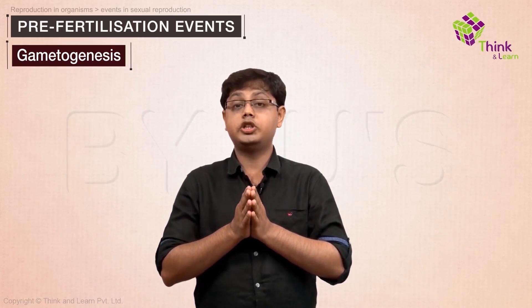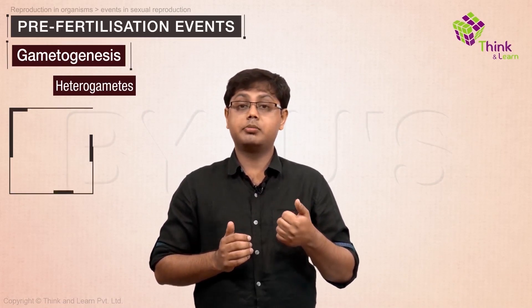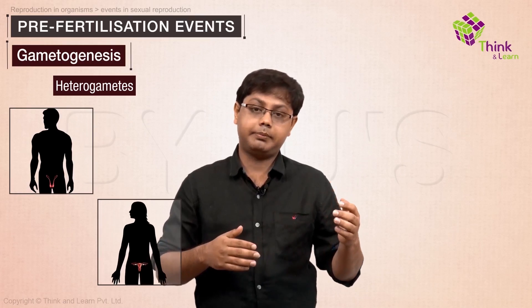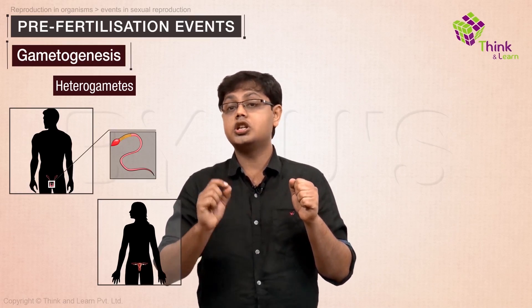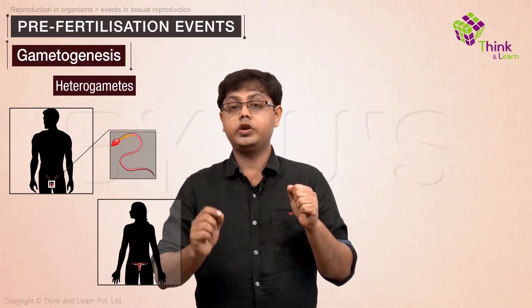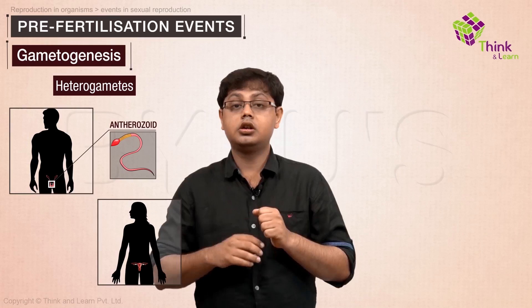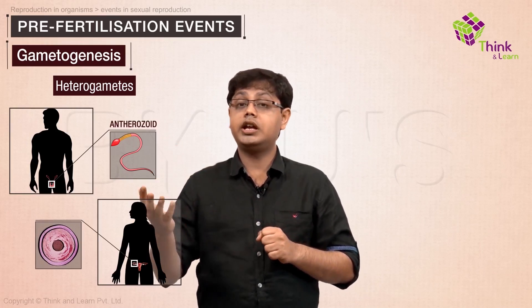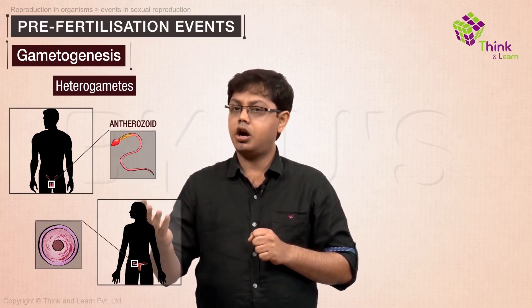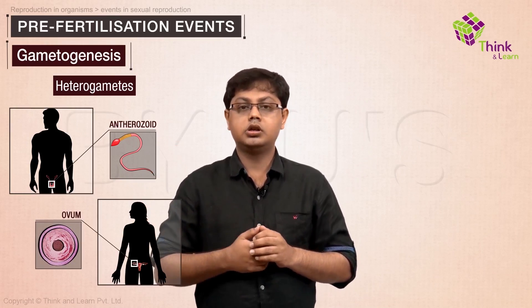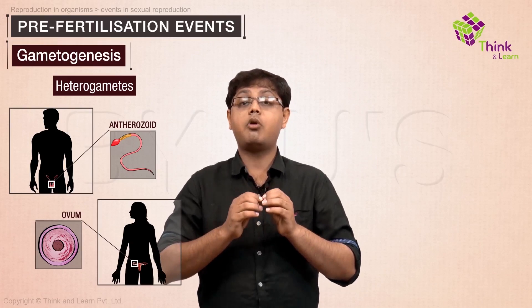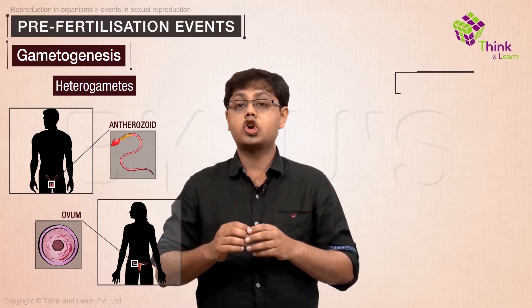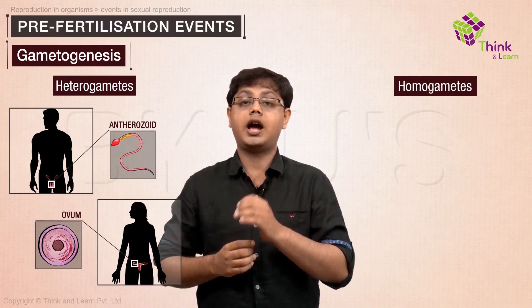The gametes produced by an organism can be of two types. Heterogametes refer to the distinct male and female gametes. The male produces the small, motile gamete called sperm, with the more generalized name being antherozoid. The female produces the bigger, non-motile gamete called the egg, also known as ovum. However, in some algae and fungi, the gametes produced are morphologically identical, called homogametes or isogametes.